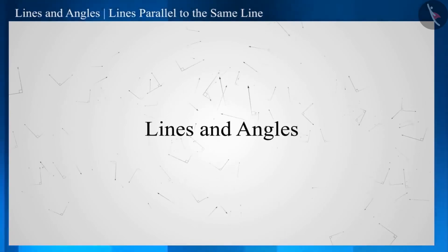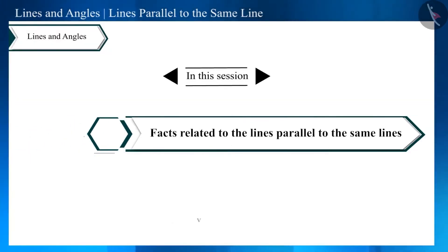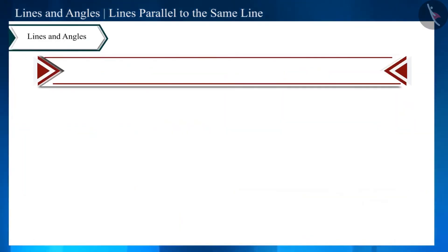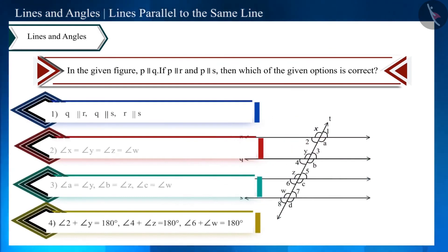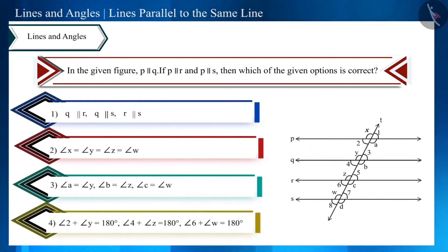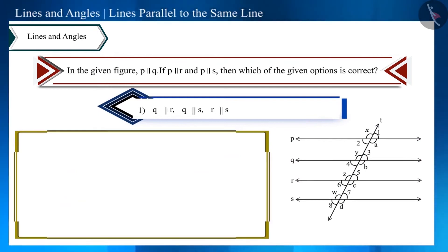Hello friends, welcome to this video on lines and angles. Today we will discuss some facts related to lines parallel to the same line. In the given figure, line P is parallel to three lines. Which of the below options is correct? Since lines parallel to the same line are parallel to each other, those three lines are also parallel — so the first option is correct.